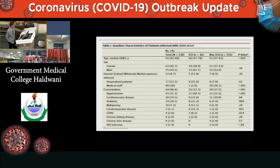Looking at the baseline characteristics of patients in Wuhan: approximately 45% of the patients were female, with male and female roughly equal. Core comorbidities in these patients included hypertension, cardiovascular disease, diabetes, malignancy, COPD, chronic kidney disease, chronic liver disease, and HIV — two patients were also found to have HIV infection.